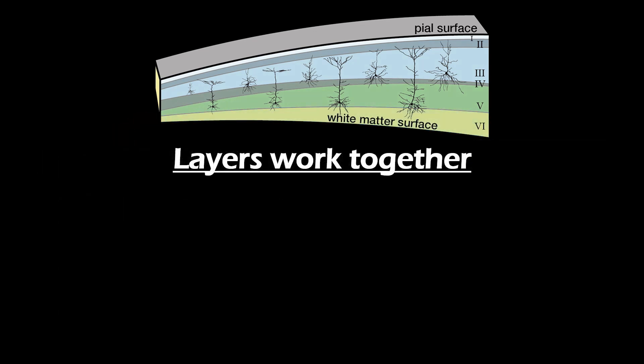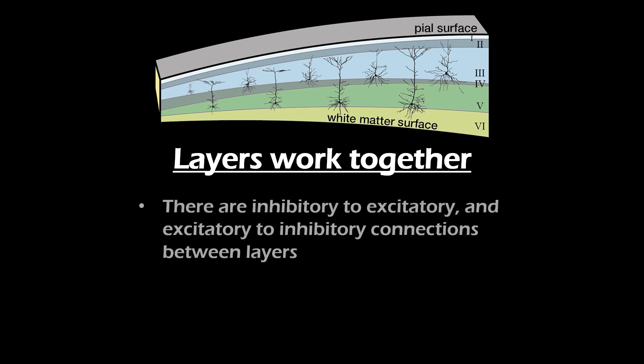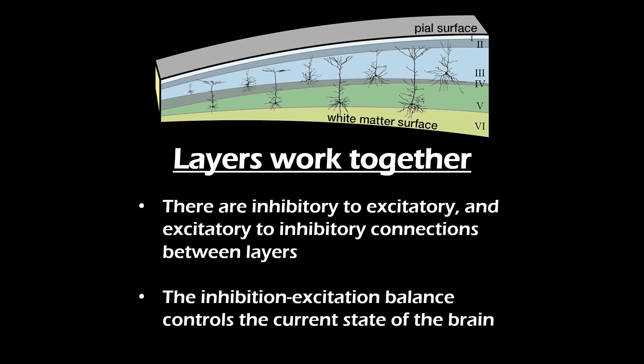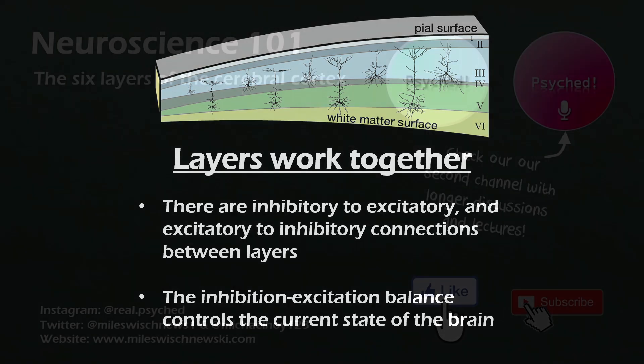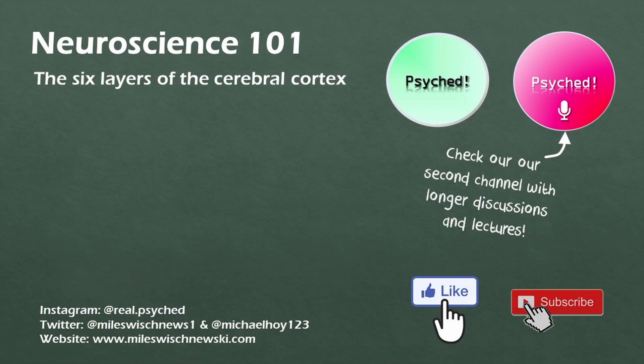Although it seems that all these layers are quite separable, the six cortical layers work together to process information. There are strong reciprocal connections between layers resulting in an inhibitory-excitatory balance that can dynamically change depending on the current state of the brain. We hope you enjoyed this introduction to the six cerebral cortical layers. If you did, consider giving this video a like, and as always, we hope to see you next time.